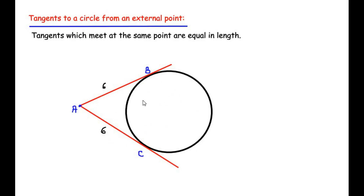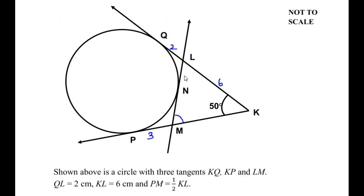In this diagram we have three external points to the circle. The first is point L, through which two tangents LQ and LN are drawn. The second external point is M, through which tangents MN and MP are drawn. The third external point is K, through which tangents KQ and KP are drawn. According to the theorem, tangents from an external point are equal, so if LQ is 2 centimeters then LN is also 2 centimeters. Similarly, if MP is 3 centimeters then MN is also 3 centimeters.